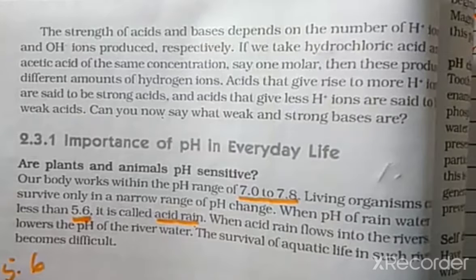Good afternoon students. Today we will discuss the importance of pH in everyday life. Are plants and animals sensitive to pH? Yes. Our human beings work at a pH range of 7.7 to 7.8 in living organisms. When the pH of rainwater is less than 5.6, it is known as acid rain.